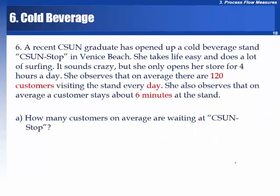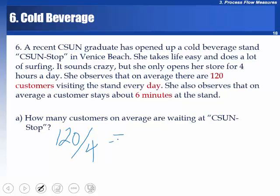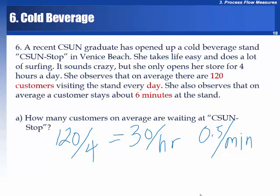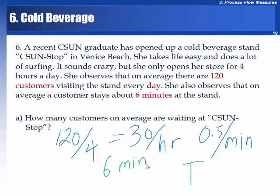If 120 people over four hours visit this stand, that would be 30 per hour — that is throughput. Throughput carries a time component: how many per what time period? 120 per four hours, or 30 per hour, or 0.5 per minute — all these numbers are correct. We don't have inventory; we are looking for it.